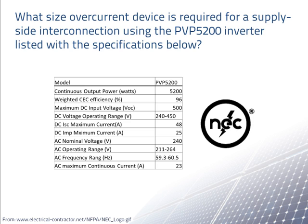NEC 690.8 requires that overcurrent devices must be rated to carry not less than 125% of the maximum current. We usually find the maximum current by multiplying the short circuit current by 125%, but we do not need to in this case because we are already given the maximum rated current.